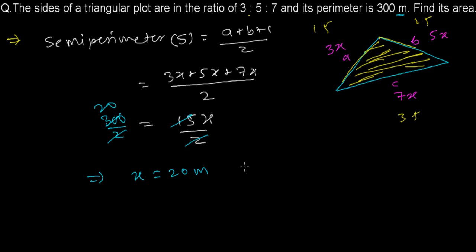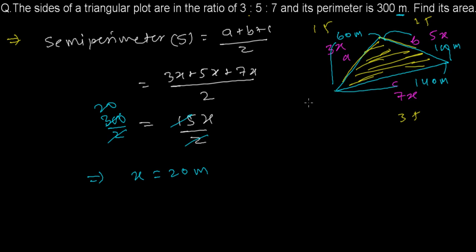Now our sides are: 3 × 20 = 60 meters, 5 × 20 = 100 meters, and 7 × 20 = 140 meters. These are the side lengths of the three sides of the triangular plot.